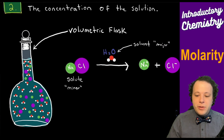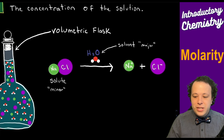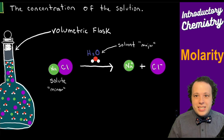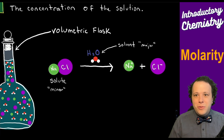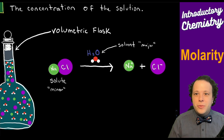So if we take sodium chloride, it's going to break down into its two individual ions: Na⁺ and Cl⁻. Now, how do we report this in the form of concentration? This is where molarity is going to come in.